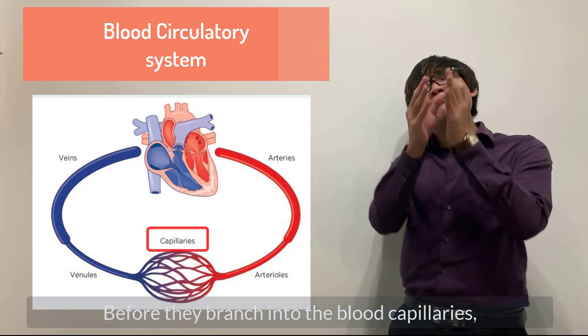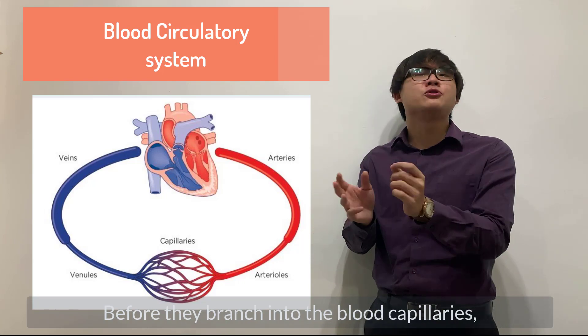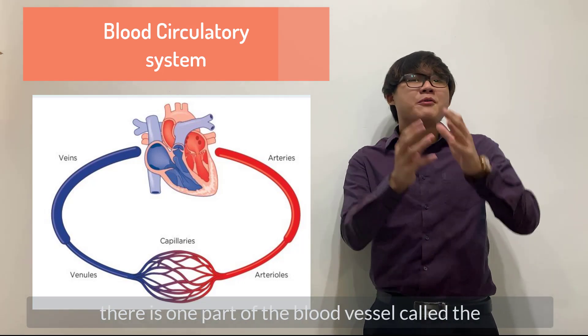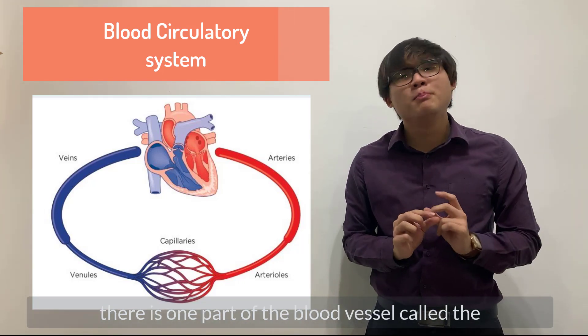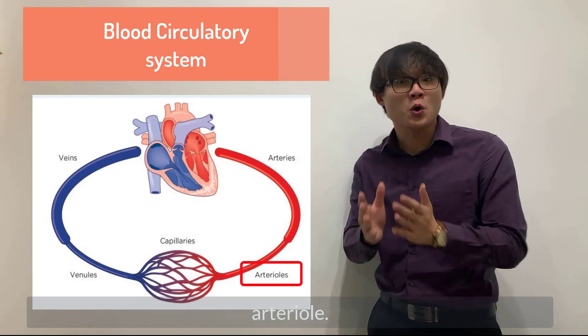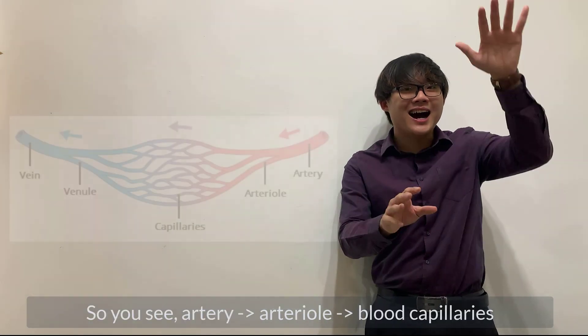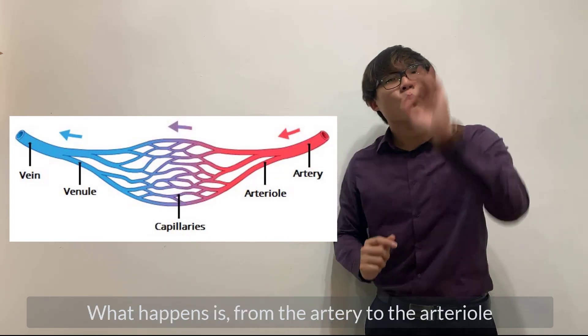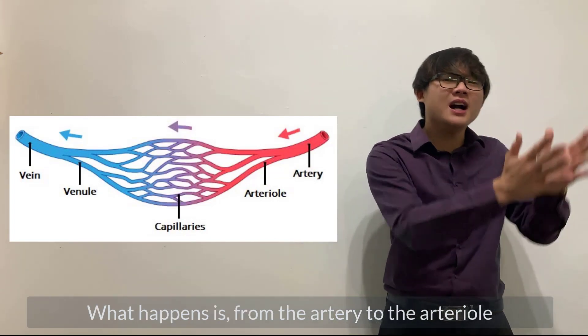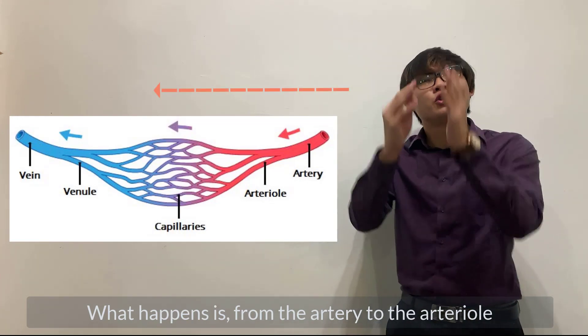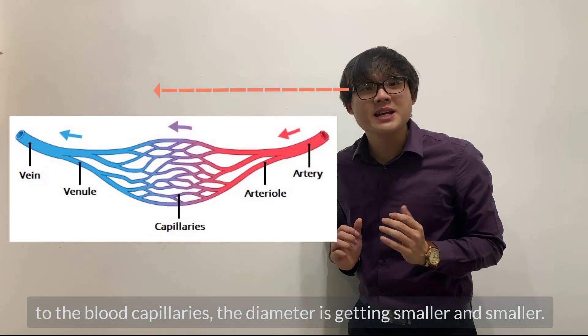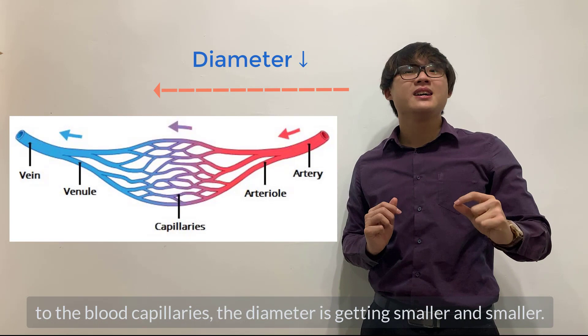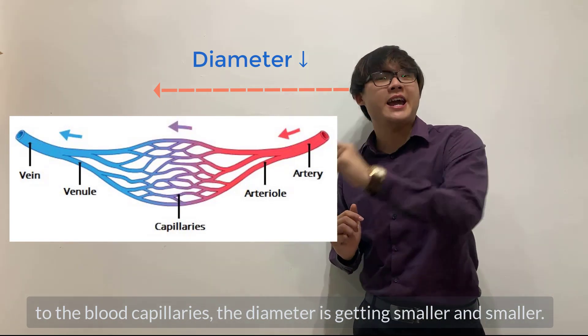Before they branch into the blood capillaries, there is one part of the blood vessel called the arteriole. So you see, artery, arteriole, blood capillaries. What happens is, from the artery to the arteriole to the blood capillaries, the diameter is getting smaller and smaller.